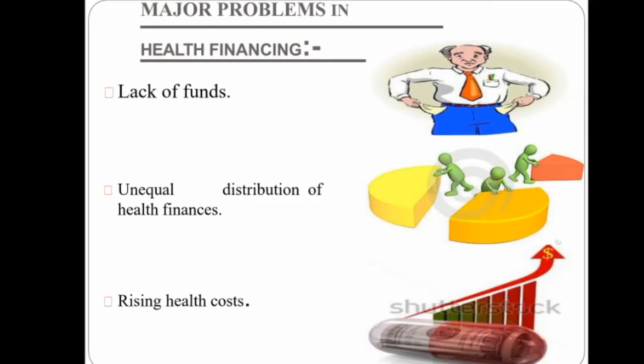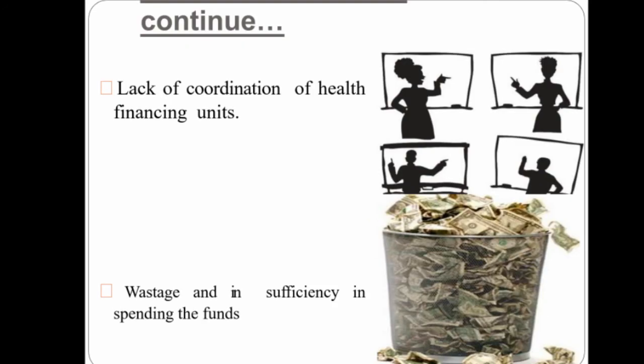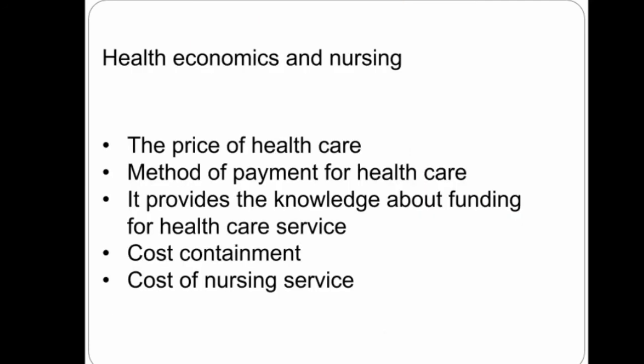The major problems in health economics are: lack of funds and poor distribution of health finance, rising health costs, lack of coordination of health financing units, and wastage and inefficiency in spending funds. In health economics of nursing, key areas include: the price of health care, method of payment for health care, providing knowledge about funding, health care services, cost containment, and cost of nursing services.